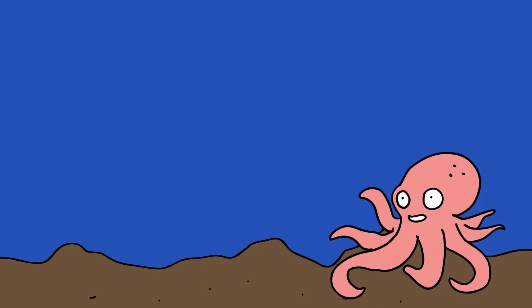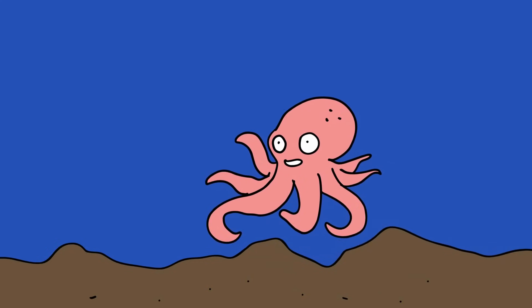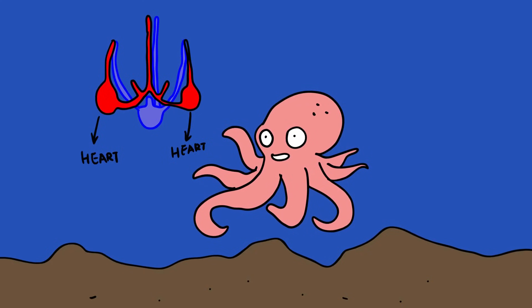Octopus. An octopus, like its other comrades in the cephalopod world, has three hearts. Two hearts are dedicated to pumping blood to the gills, while the other takes care of the rest of the body.